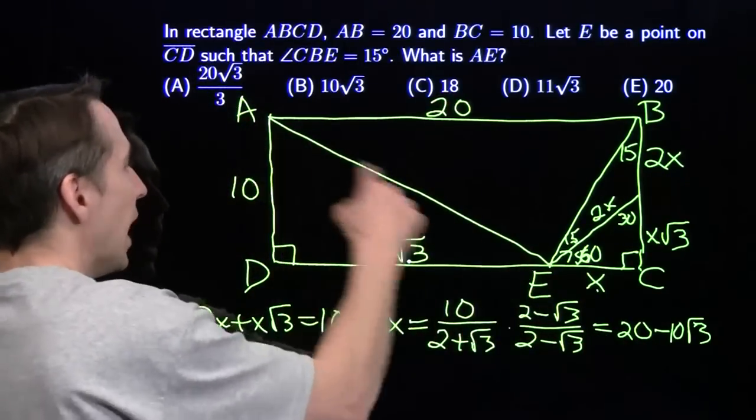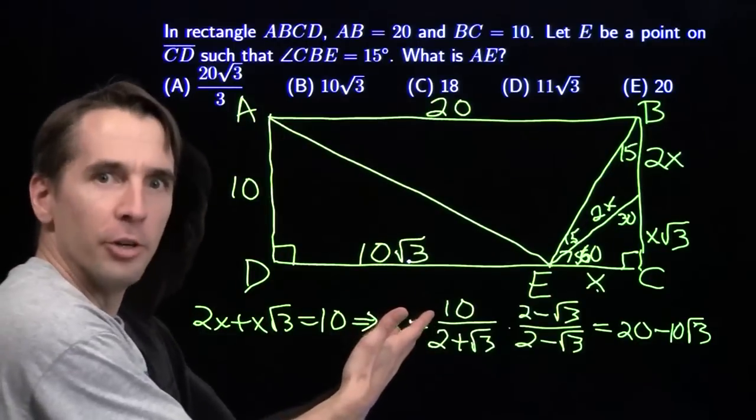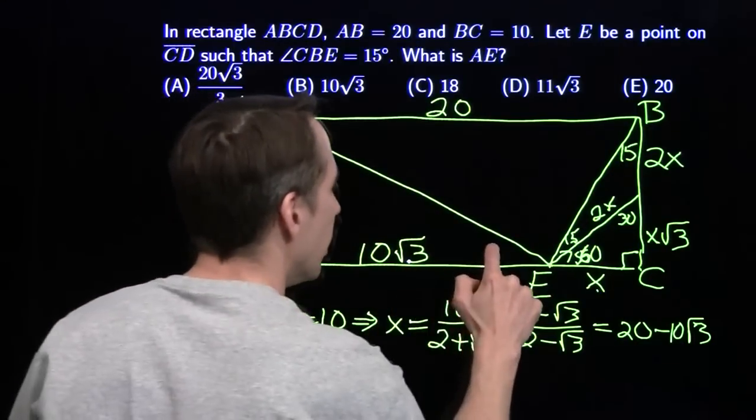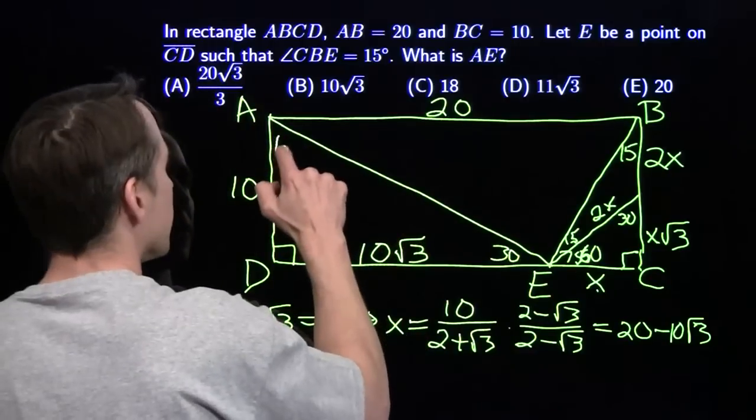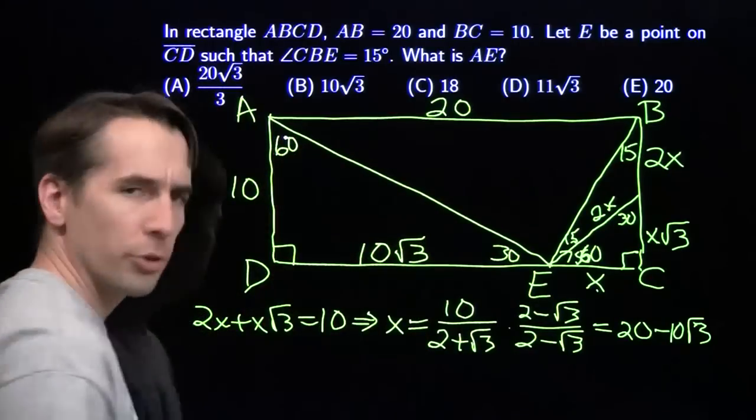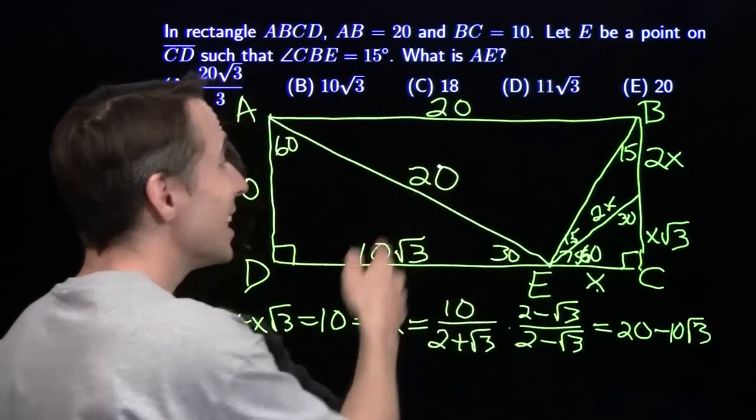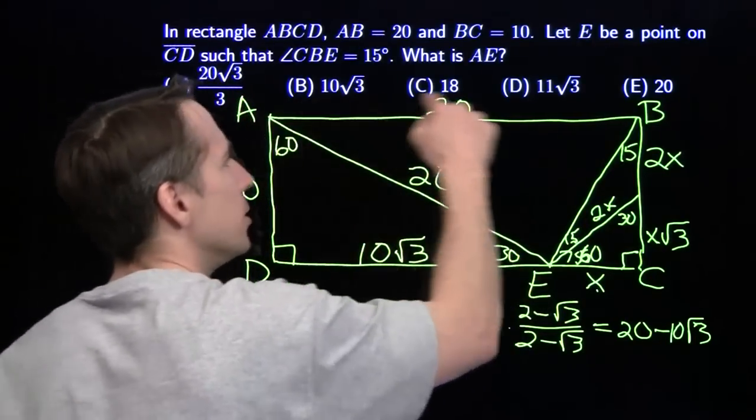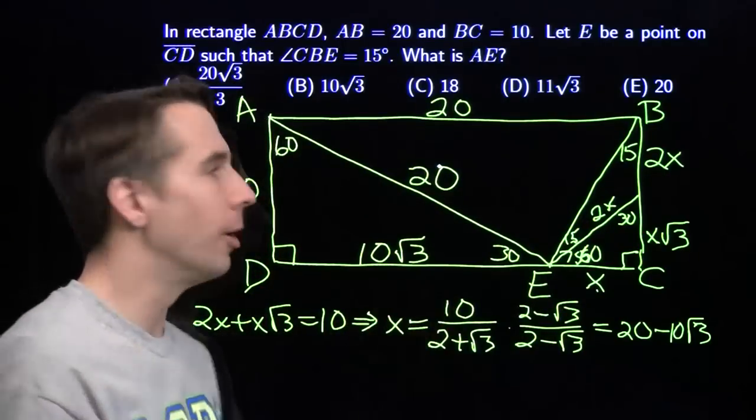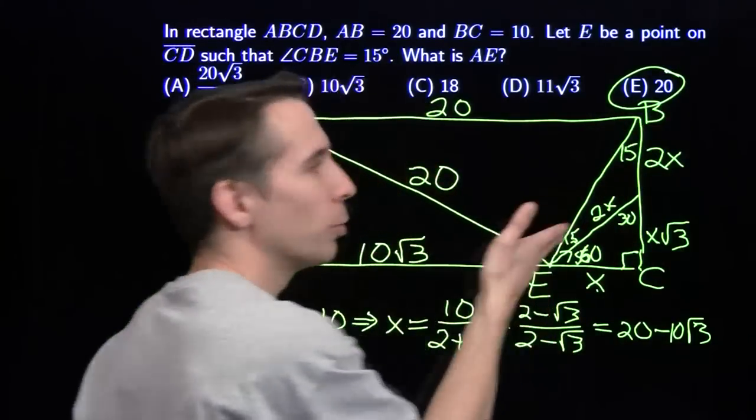So now we have a 30-60-90 triangle. Another one. This is 30. This is 60 since this leg is root 3 times that leg. So we know that the hypotenuse is twice the shorter leg. Hypotenuse is 20. And this triangle is isosceles all along. And we're done.